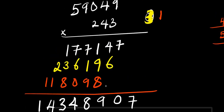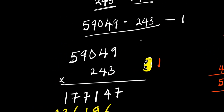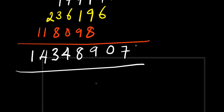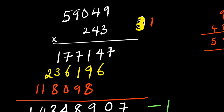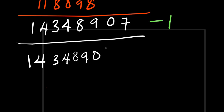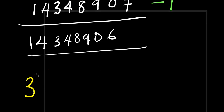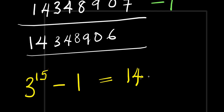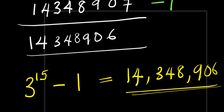So this is the answer for 59,049 times 243. Remember, we still have minus 1, so we subtract 1 from here. We will have 14,348,906. So this is our answer for 3 power 15 minus 1, without the use of a calculator. Ladies and gentlemen, this is how you can do it step by step. Thank you and goodbye.